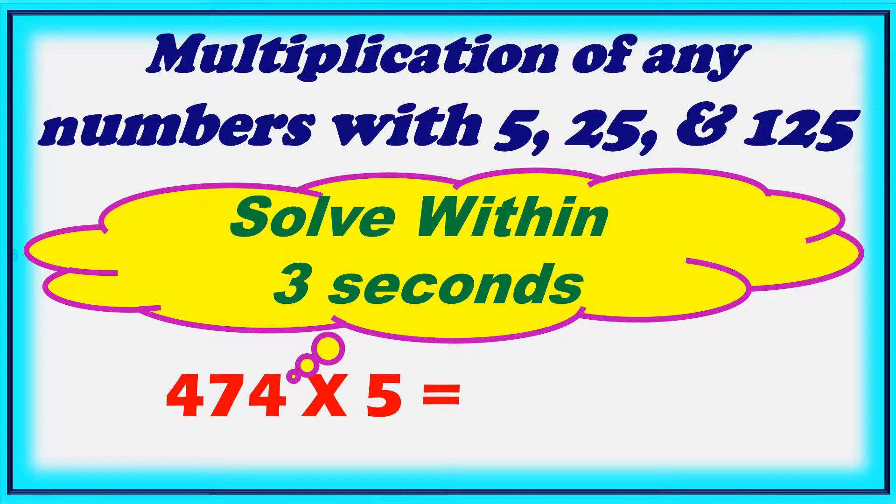Multiplication of any numbers with 5, 25 and 125 you can solve within 3 seconds. For example, if 474 is multiplied by 5, you will get 2370. You can multiply any numbers by 5, 25 and 125 within seconds.